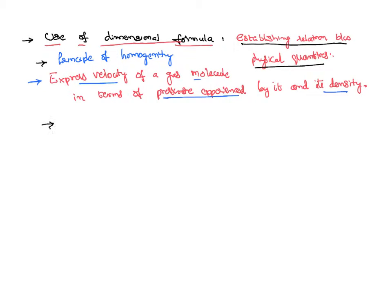The problem is simply: velocity of a gas molecule depends on pressure to the power of unknown dimensions—we don't know to what power it depends—and the density to the power of y. But of course, proportionality can be eliminated with a constant that is not going to have any dimensions.